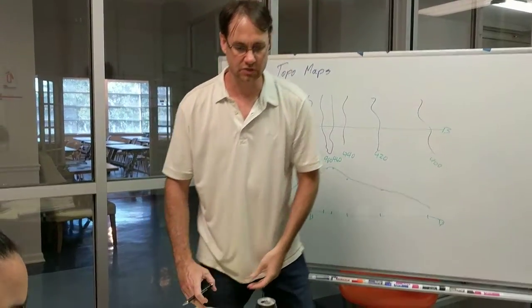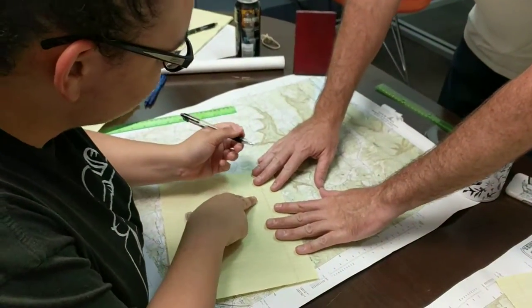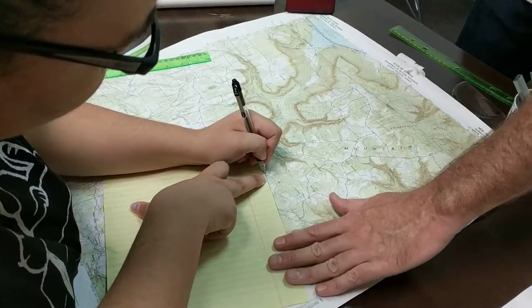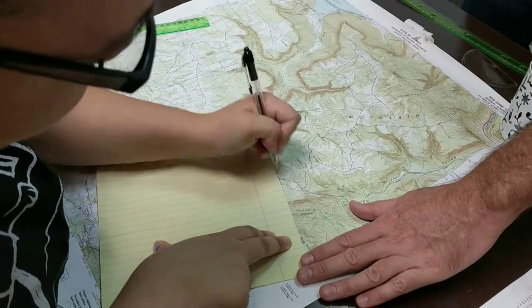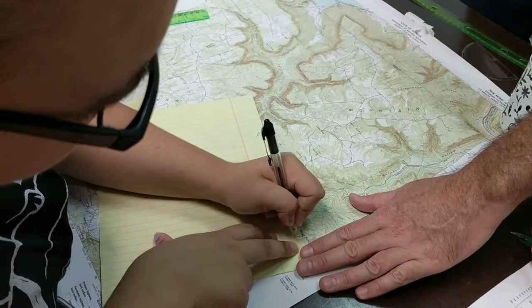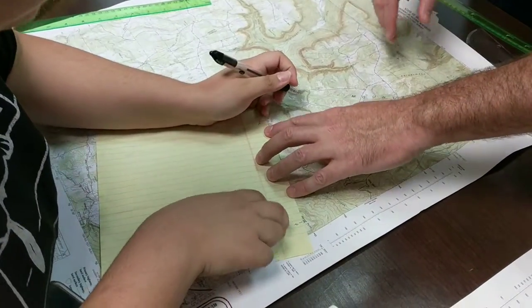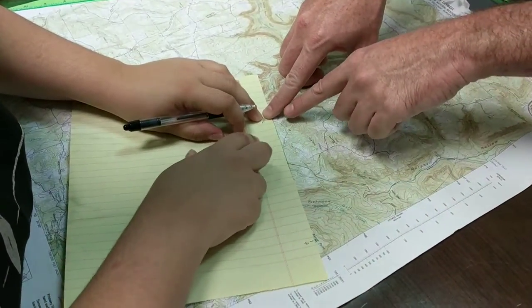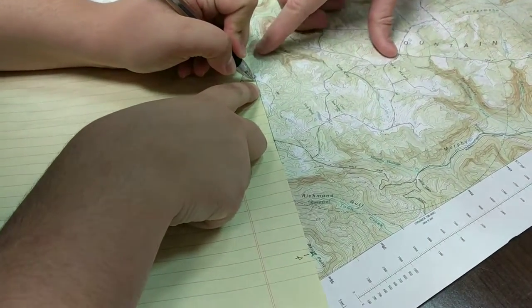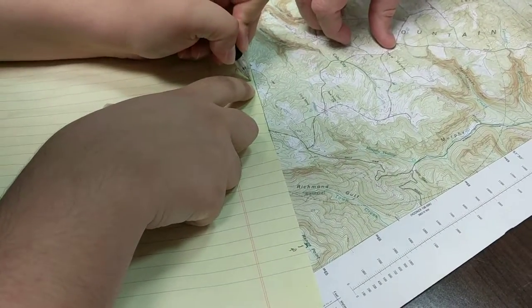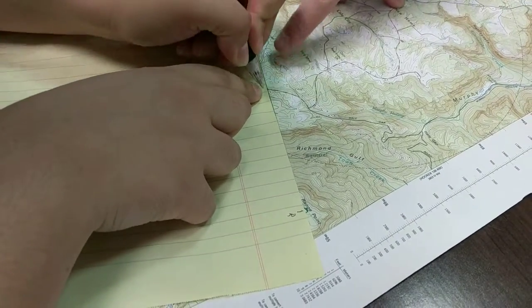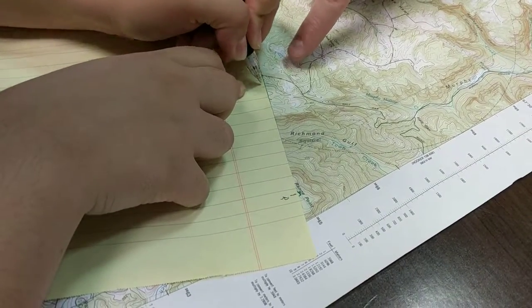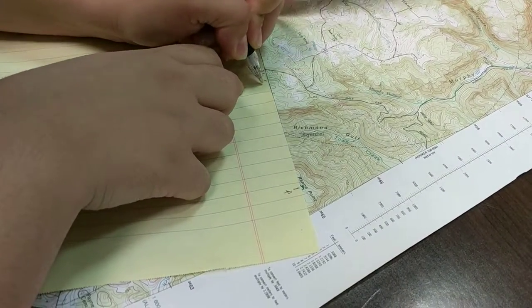Looking at Dominique's as an example — she's going to draw a tick mark and label it W for Wells Cemetery, then another and label it R for range point. She's going to draw a tick everywhere her line crosses an index contour — which, you guys remember, are the bold ones — and then go back and label the elevation of each one of those contours.